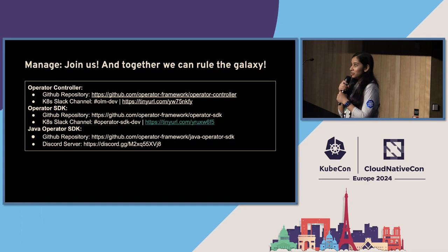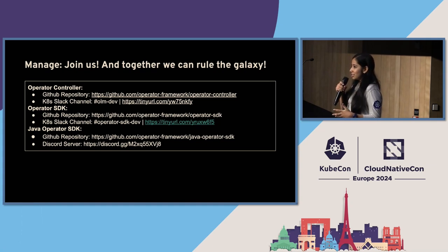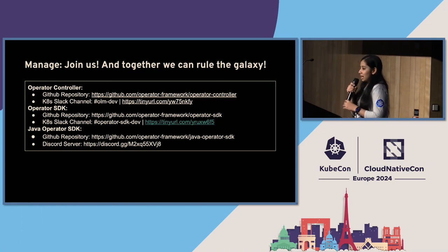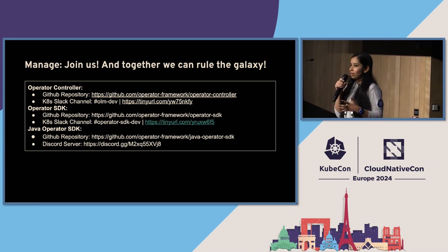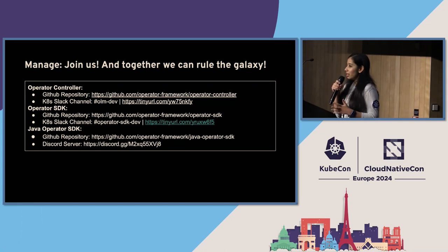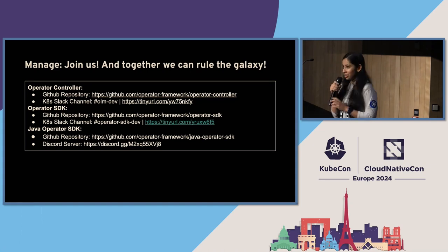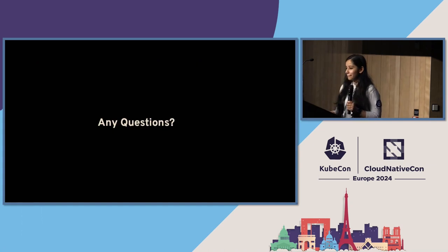Please let us know how you feel about the new architecture and any changes you'd like to see. We are very active upstream. We have a Slack channel called OLM Dev for OLM, and for SDK we have Operator SDK Dev. We welcome community contributions because this V1 architecture is based on feedback the community has provided to us. Any questions?